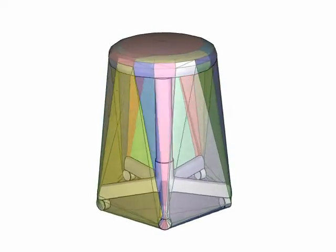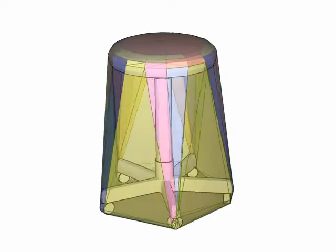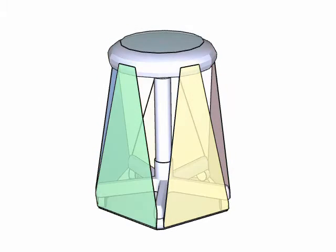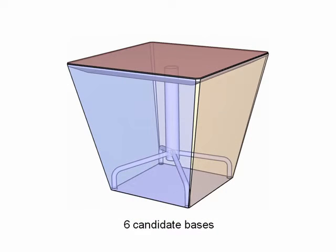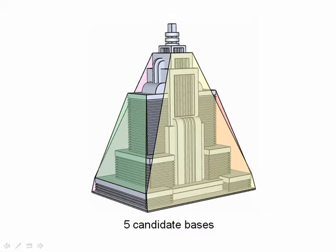By computing the convex hull and analyzing the object's static stability with respect to hull faces, we extract a set of base candidates. For example, we have 7 base candidates for this stool model. Here we show more examples of extracted candidate bases for different models.